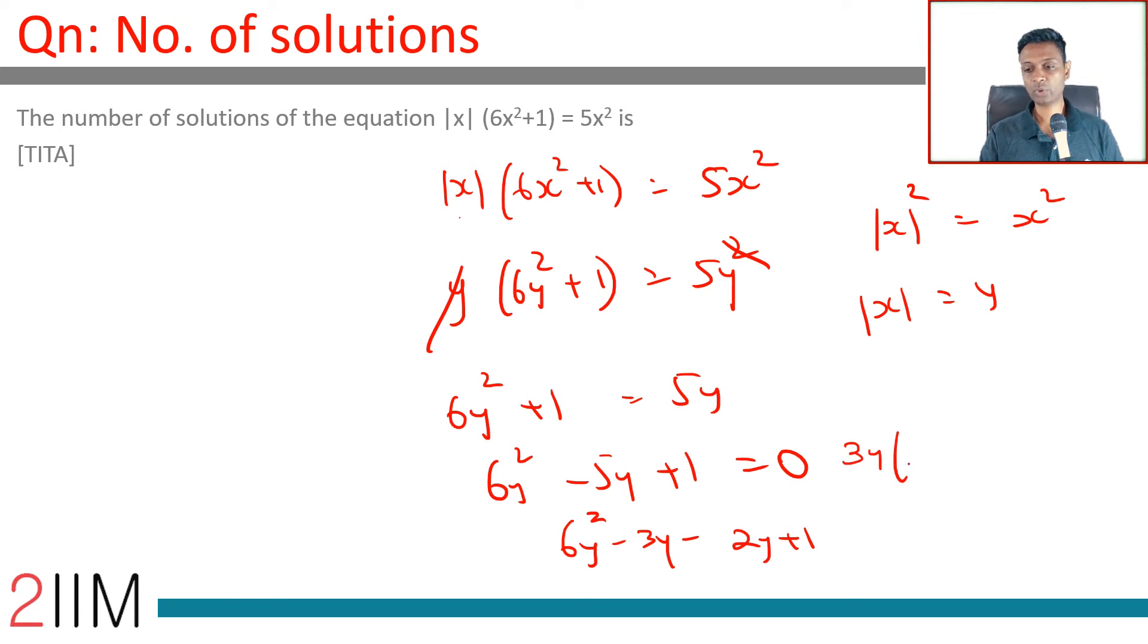So 3y(2y - 1) - 1(2y - 1) = 0. (3y - 1)(2y - 1) = 0. y = 1/3 or 1/2.